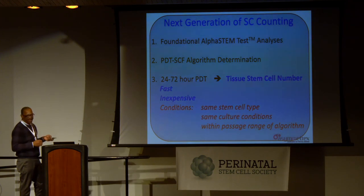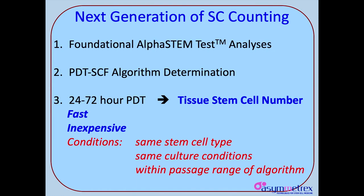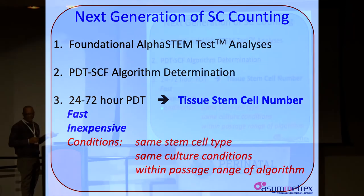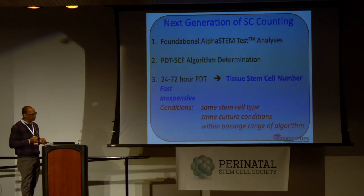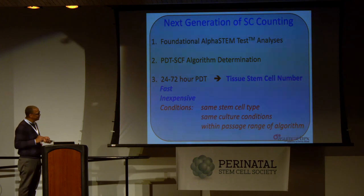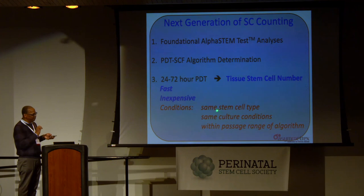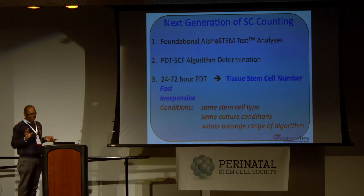Right now we're at 72 hours — we can do a 72-hour growth study, and from that population doubling time, because of those conditions, we can get the stem cell number. It's going to be fast — a few days as opposed to a few weeks — and relatively inexpensive because there's not a lot of cell culture going on. There are some conditions we have to be wary of: these algorithms are going to be very specific for conditions, only applying for the same type of stem cell, the same culture conditions, and in the same passage range of the algorithm.